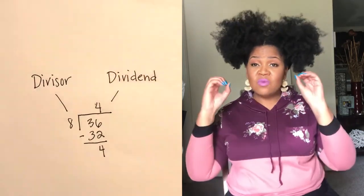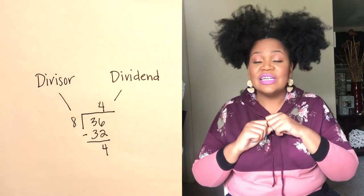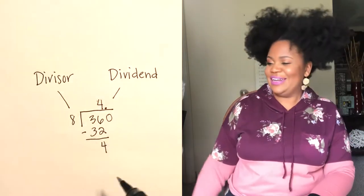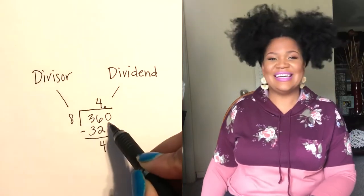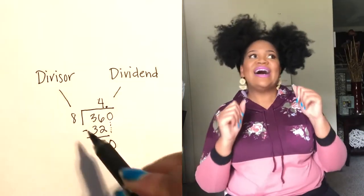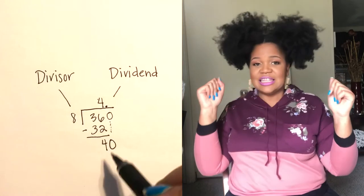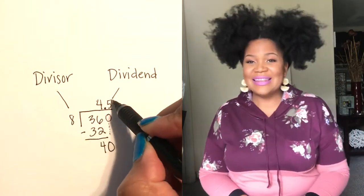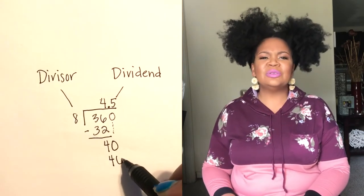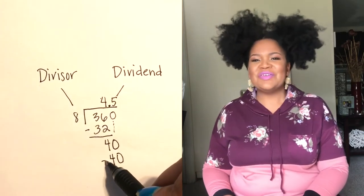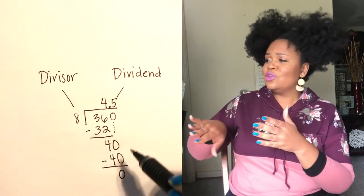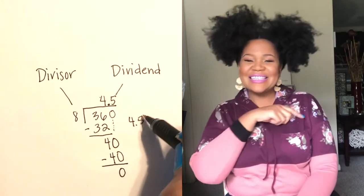Draw a line and get ready for subtraction. Take away the product from the dividend. If your answer's zero, you're finished. Any other number, gotta add a zero next to the dividend. Drop the zero down, repeat the process. Divisor goes into the dividend, multiply by the times it goes in, put the number down, start subtraction.